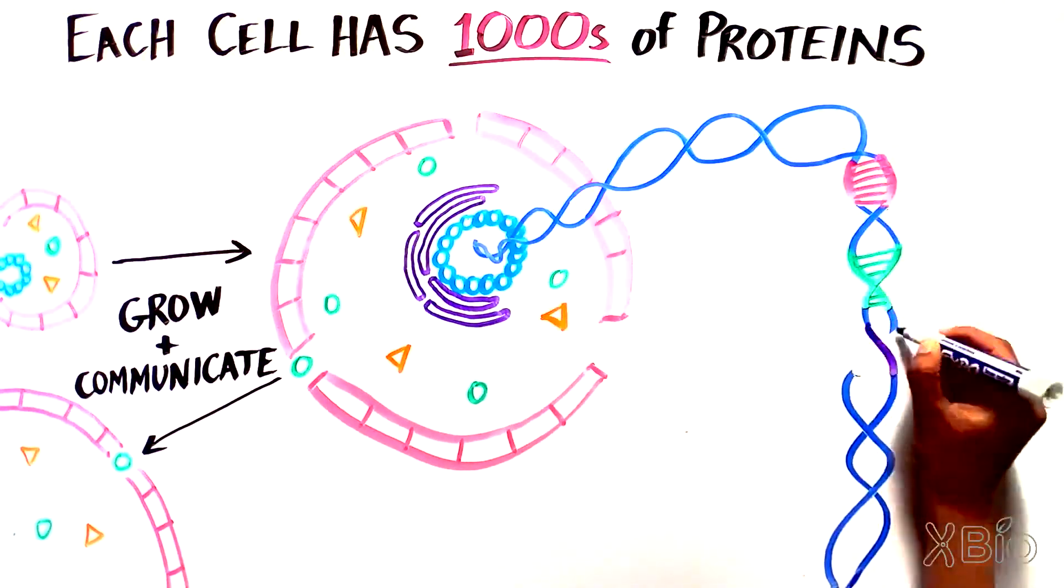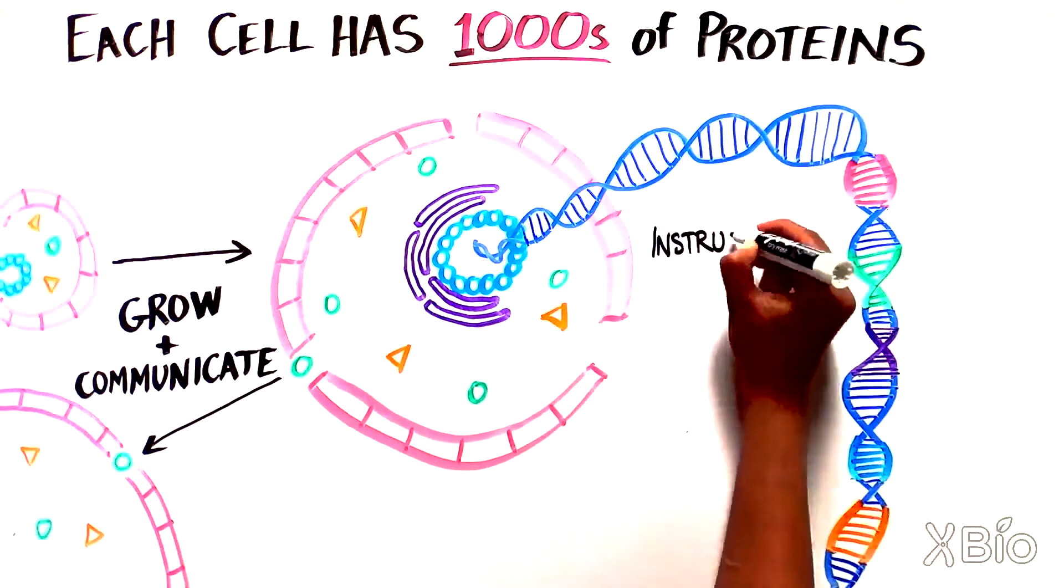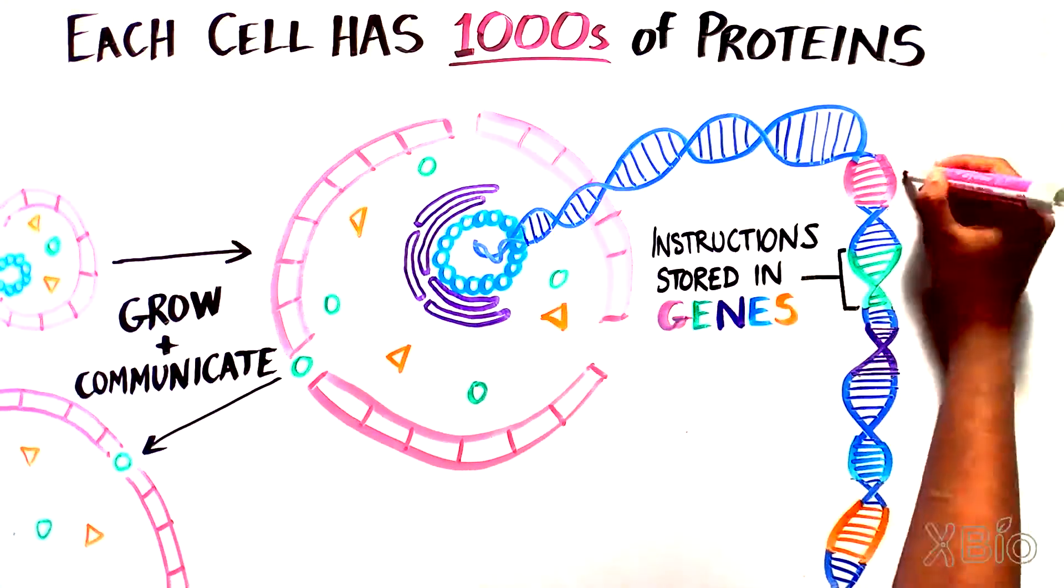To be able to make all of these different proteins, our cells use a set of instructions stored in our genes, which are made of DNA.